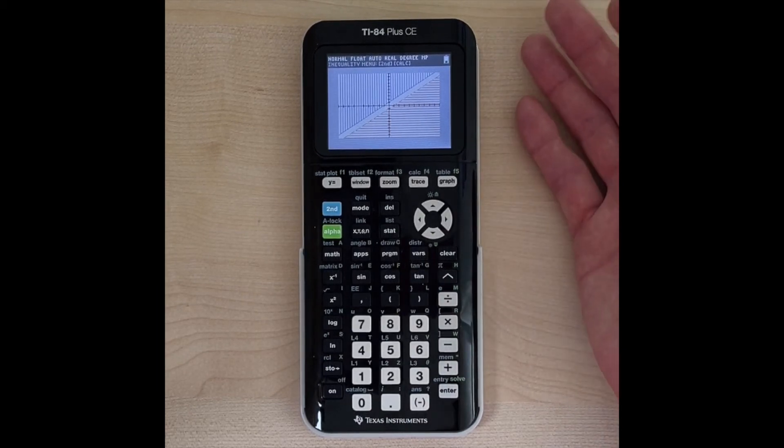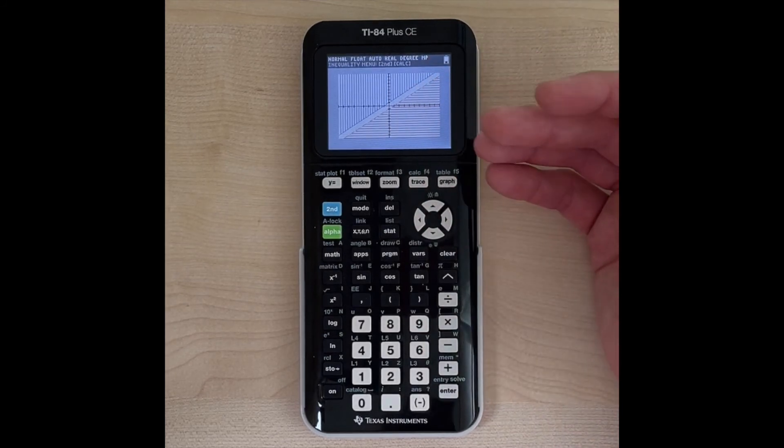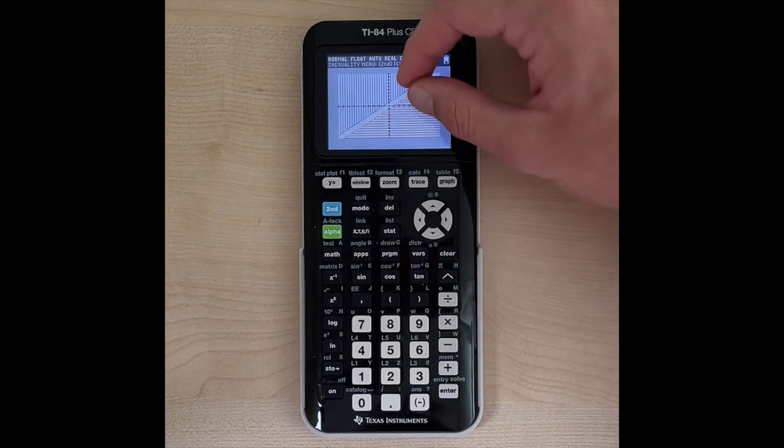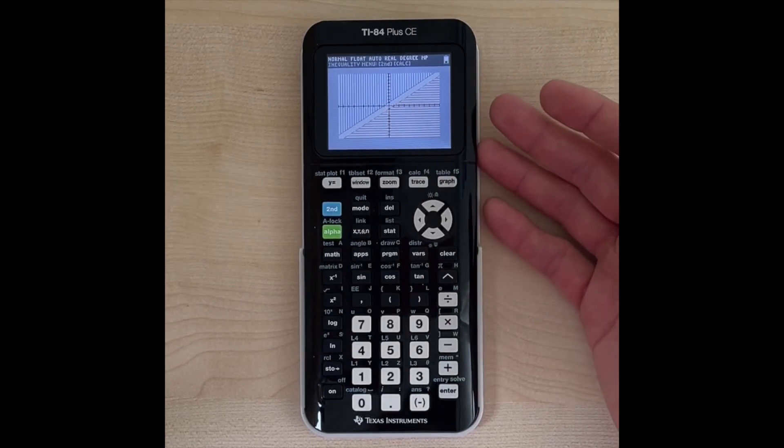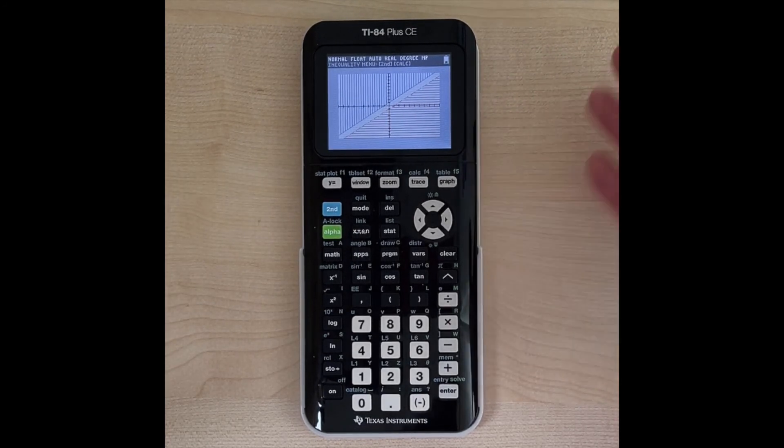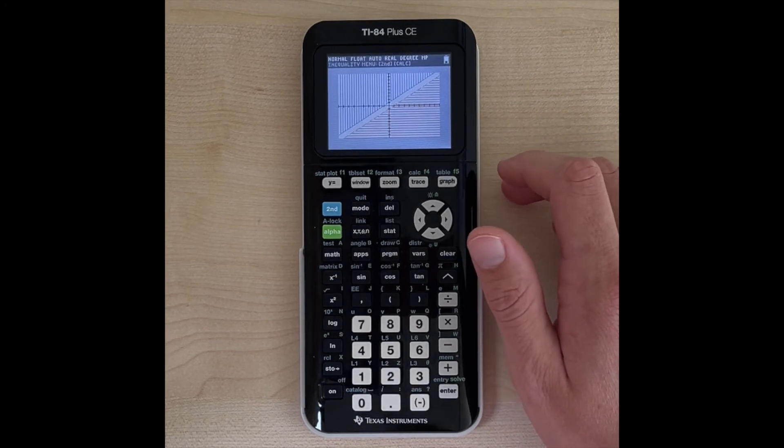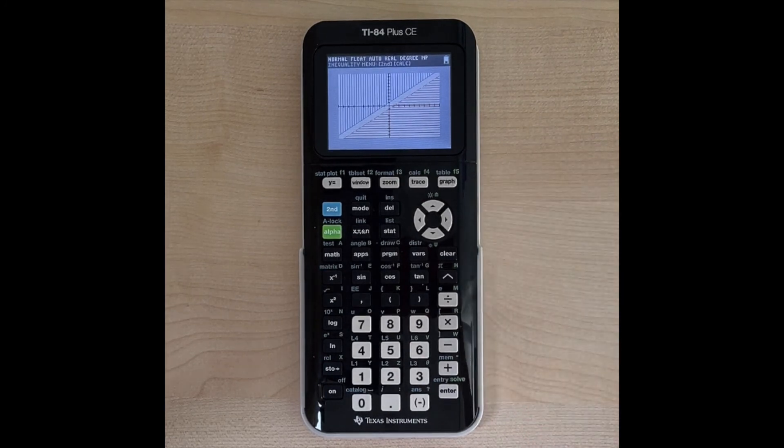The y-intercepts were different, so it gave us parallel lines, and the inequality symbol that we had created shading on the outside of the lines. So this would actually be an example of a no-solution system. And that is how you graph a system of linear inequalities on the TI-84 plus CE graphing calculator.